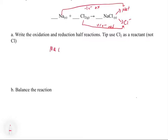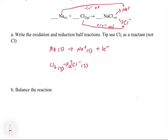The Na lost one electron and was oxidized, and the chloride gains an electron and is reduced — that's the electron transfer that makes the ionic compound. So let's write our half reactions: Na(s) → Na⁺ (which can be written as solid since the Na⁺ is in solid NaCl), and Cl₂(g) → 2Cl⁻(s). For the chlorine half reaction, we first balance the atoms — putting a 2 in front of Cl⁻ — then we add two electrons on the left side to balance the two minus charges on the right.